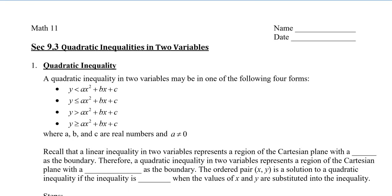In this video, we're going to take a look at how to solve quadratic inequalities in two variables. A quadratic inequality in two variables may be in one of the following four forms. They all have a squared term, and they all have a less than, less than or equal to, greater than, or greater than or equal to sign. The a, b, and c are real numbers, and a doesn't equal zero, because if a did equal zero, we would actually have a line.